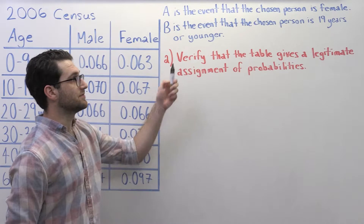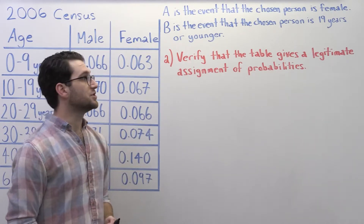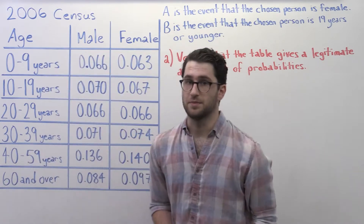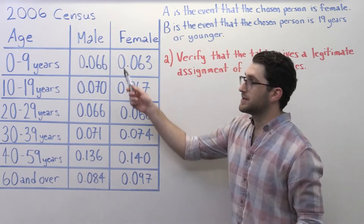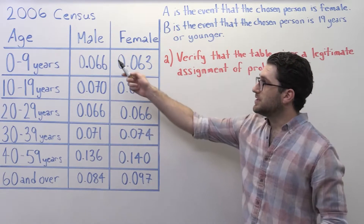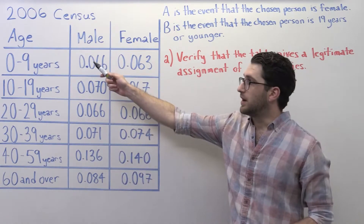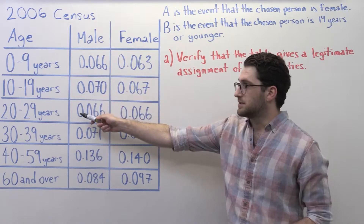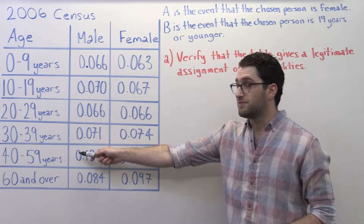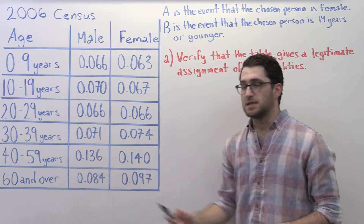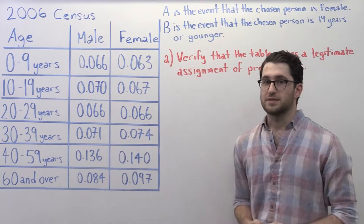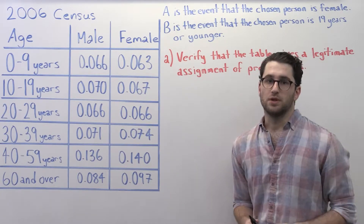Part A of the question asks us to verify that the table gives a legitimate assignment of probabilities. Let's first look at all possible outcomes in the table. The table has two columns: male and female. In terms of age, we have these rows: 0 to 9 years, 10 to 19 years, 20 to 29 years, 30 to 39 years, 40 to 59 years, and 60 years and over. Because no one can be below the age of zero, this table has all possible outcomes.